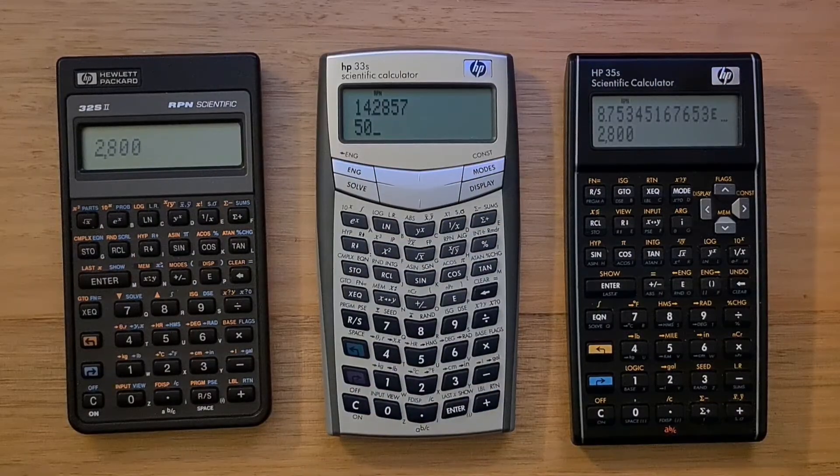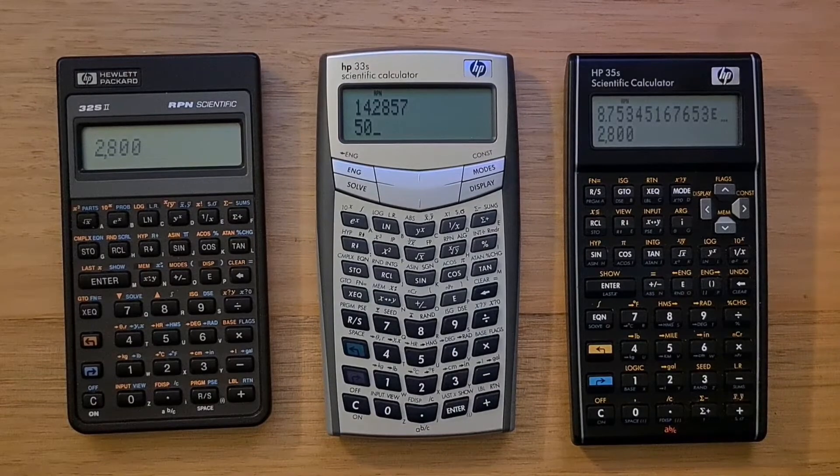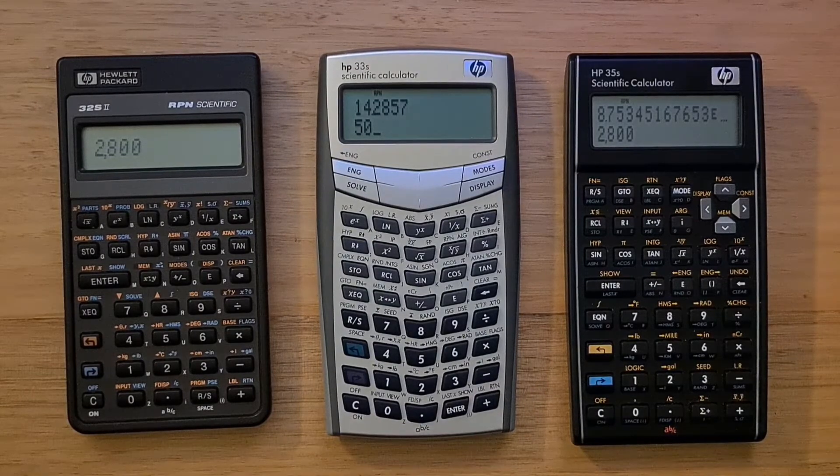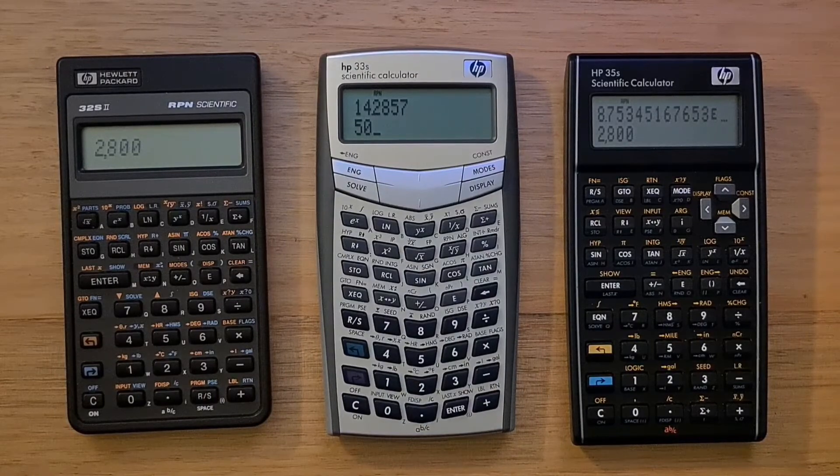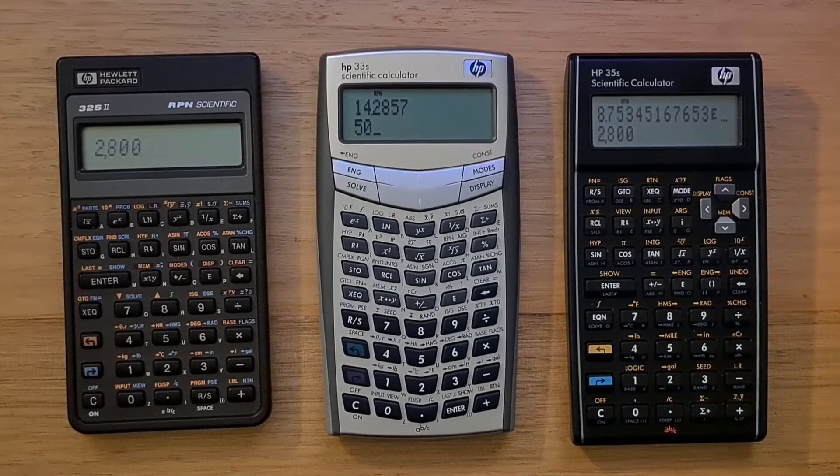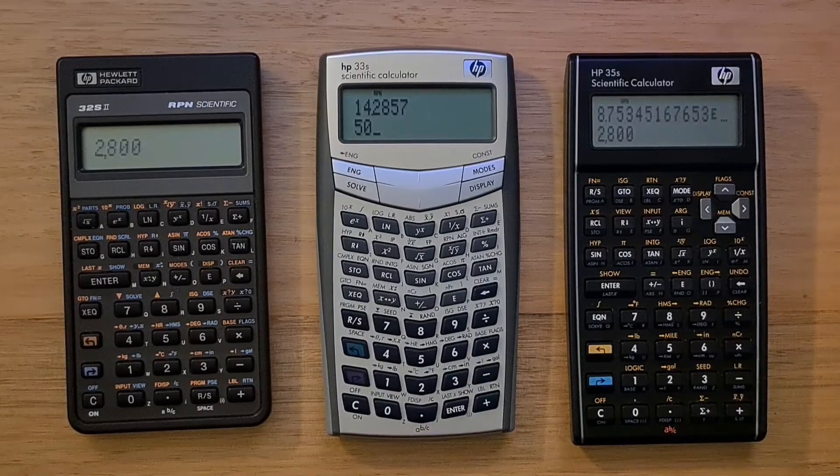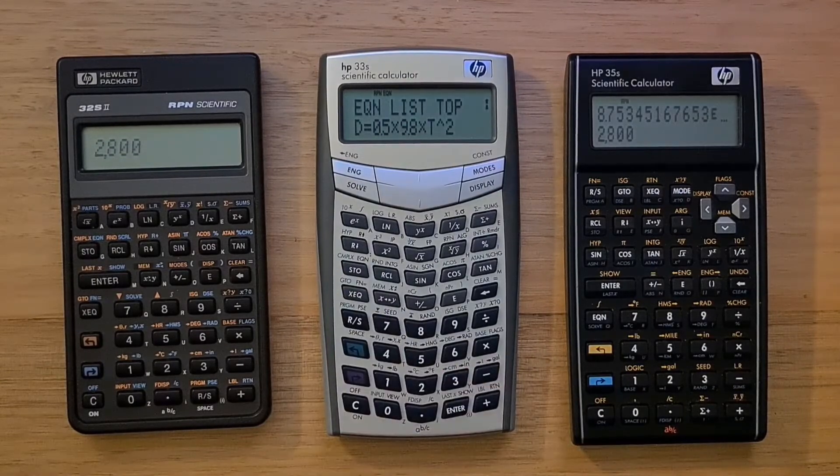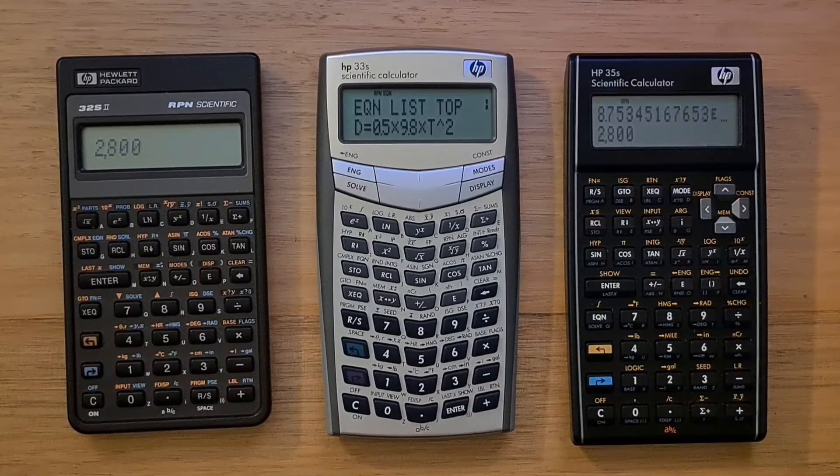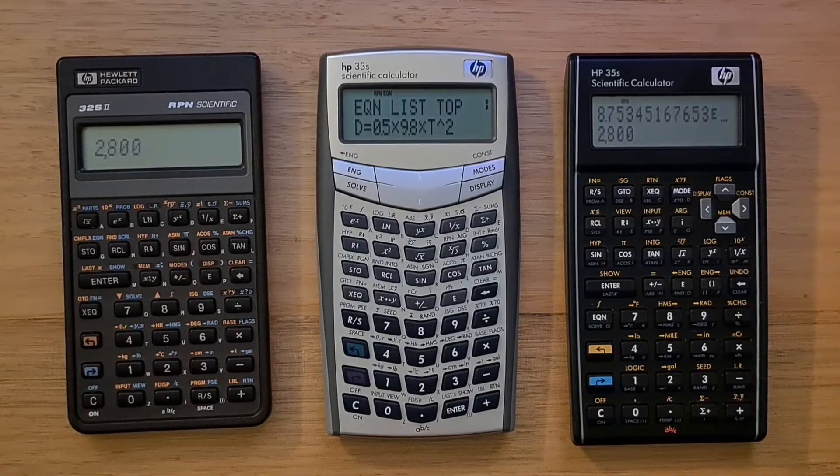Another feature supported by these calculators is the ability to enter equations and evaluate, solve or integrate them. This is a very useful feature and something that was not available on, say, the 42S. The feature works more or less the same way across the models. To access and enter equations, you would hit the equation key. I've already entered the fall distance equation that calculates the distance an object falls under gravity in time t.